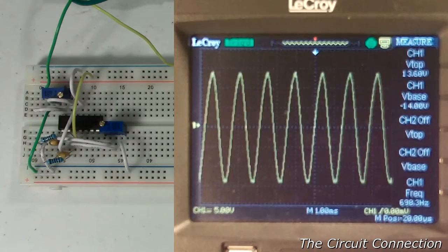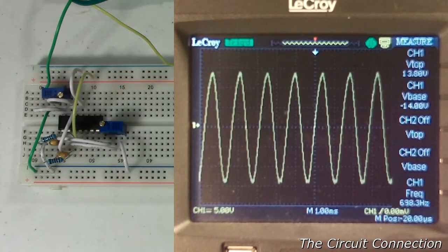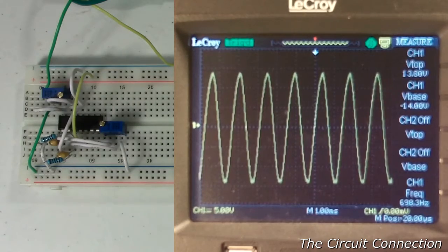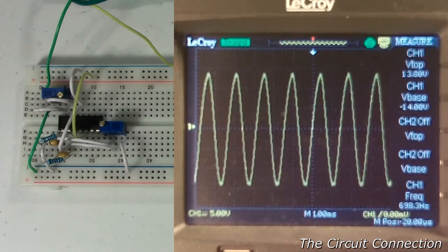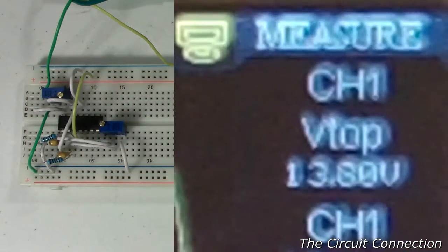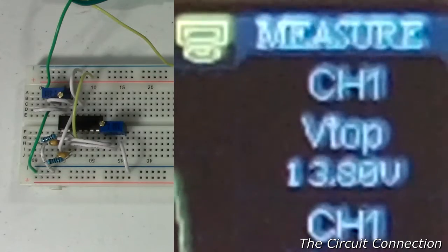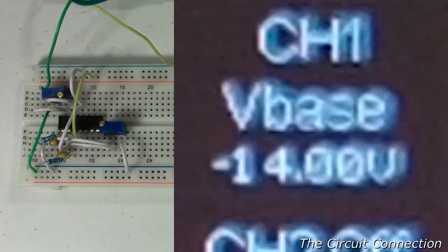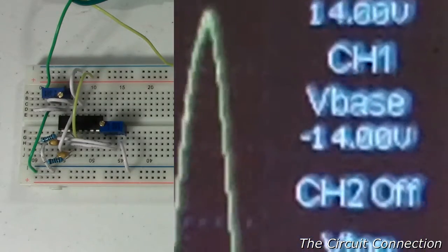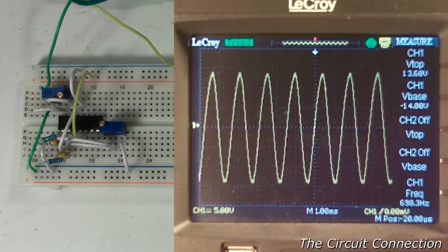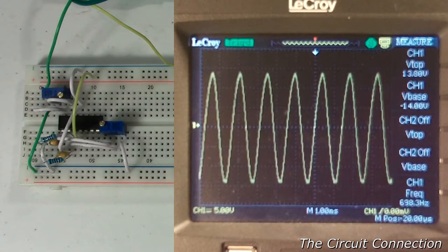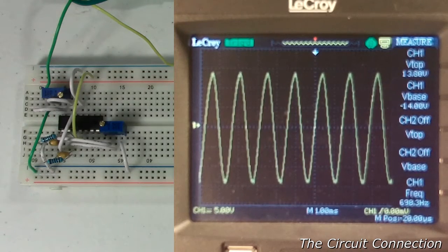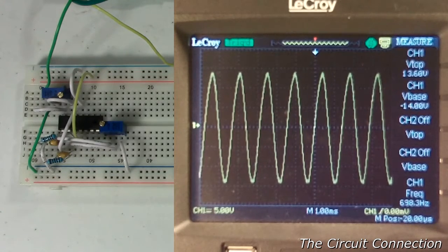And so, if we were to take a look at V top, which is the peak of the waveform, it's at approximately 13.8 volts for a peak. And if we look at V base, V base says that it's at about negative 14 volts. And so basically, that looks very good because it's very symmetrical for the most part.